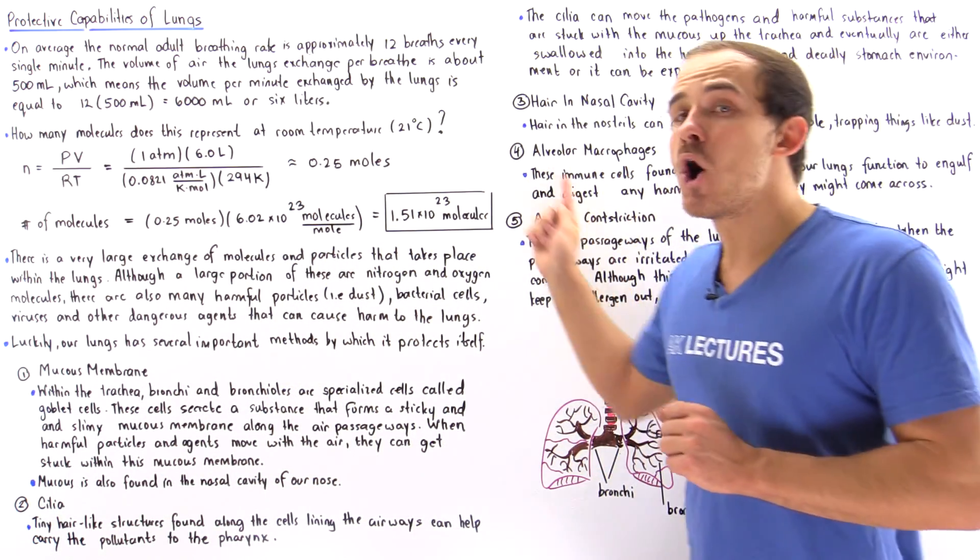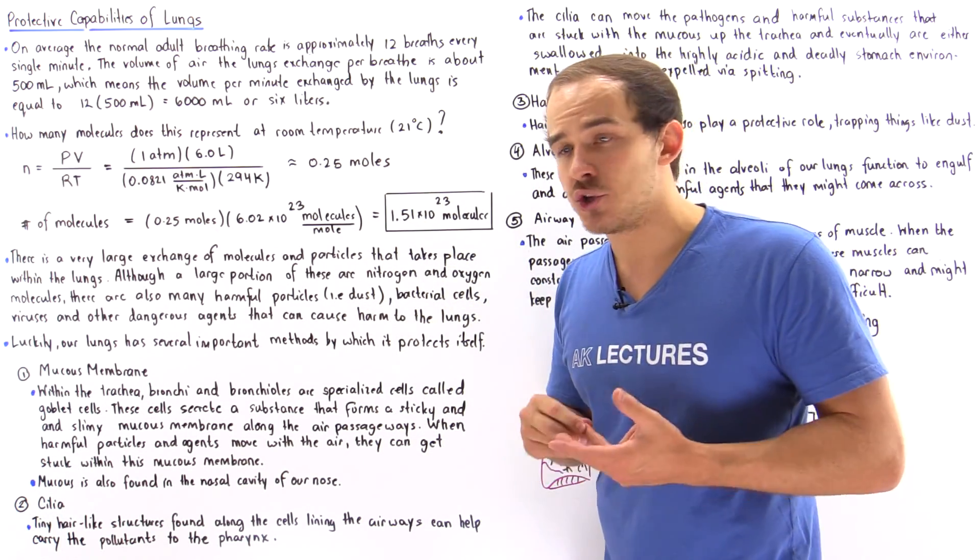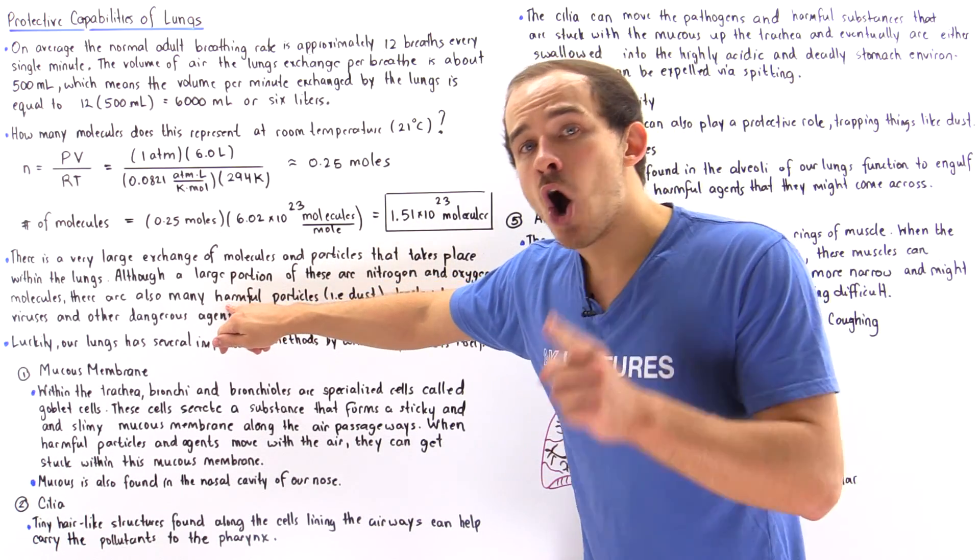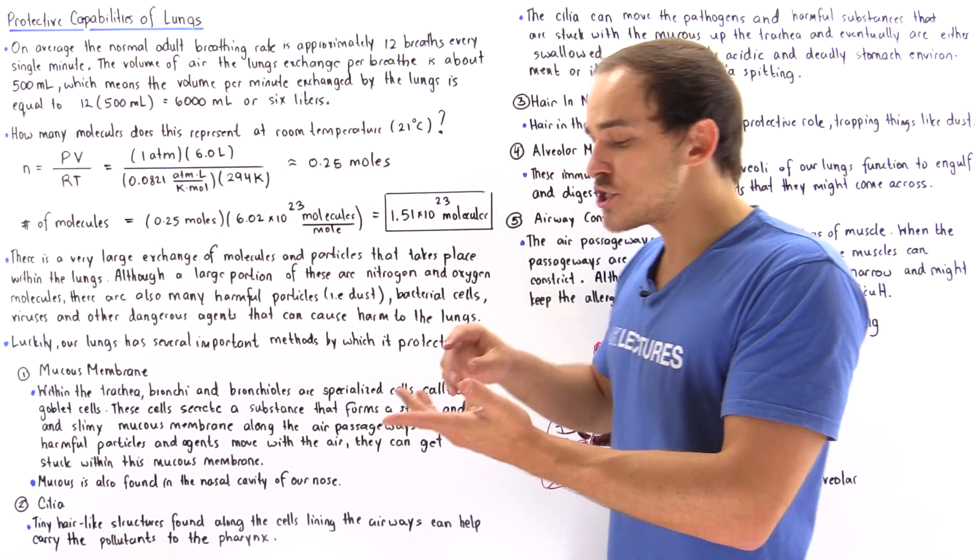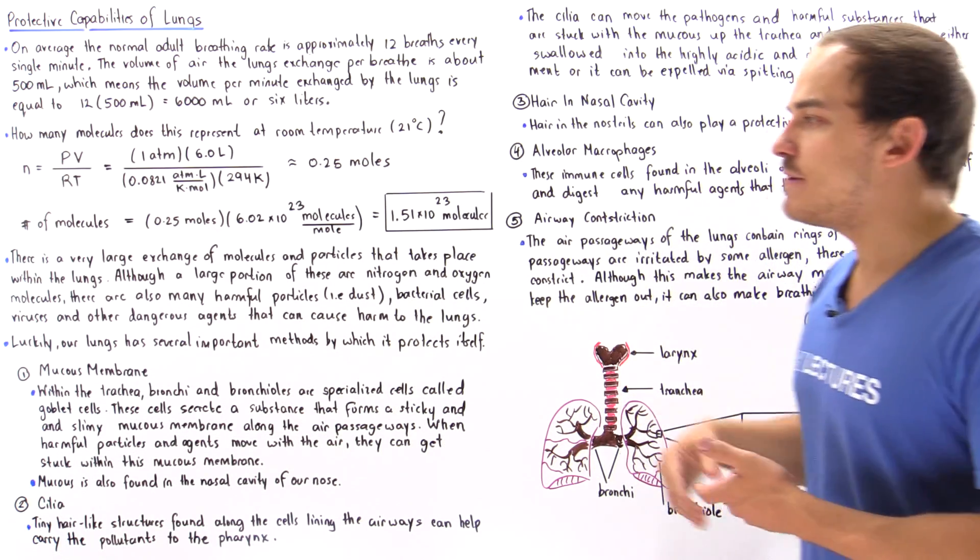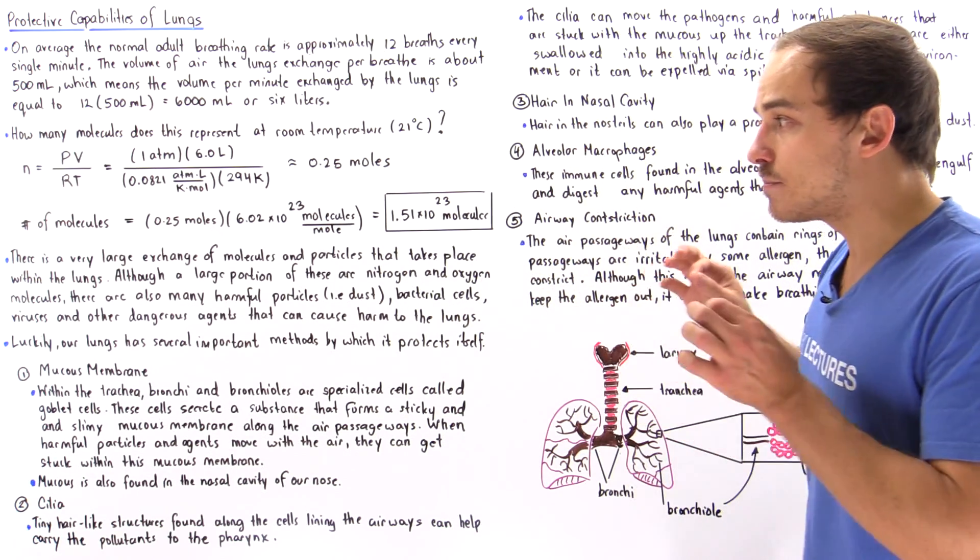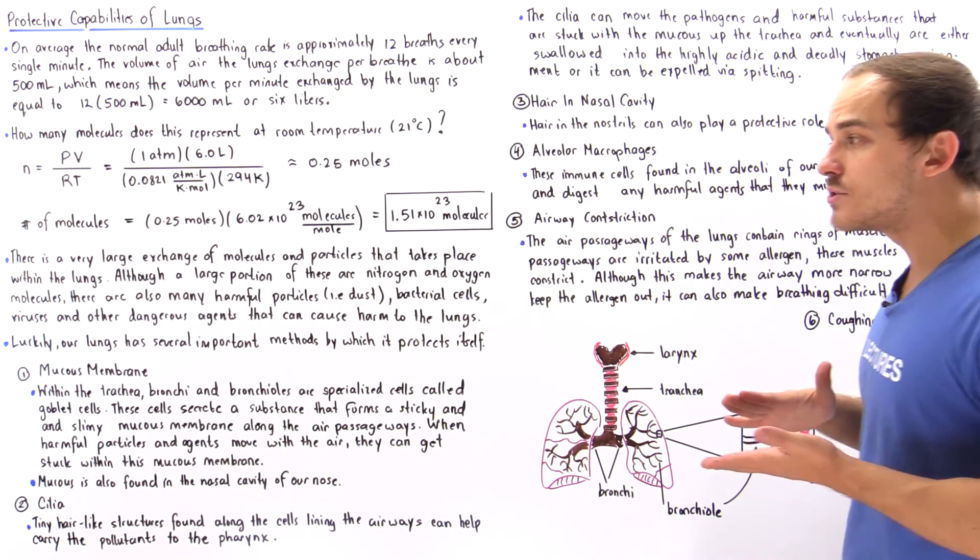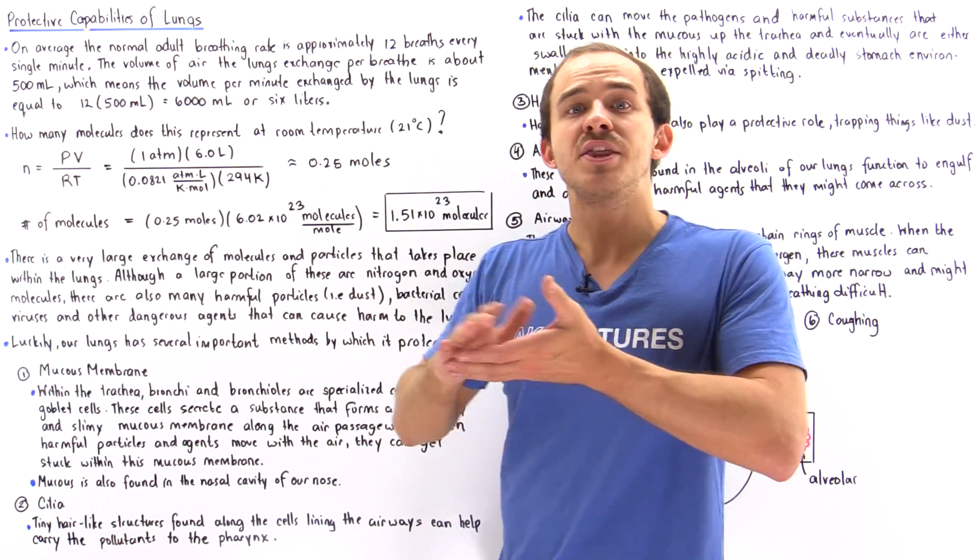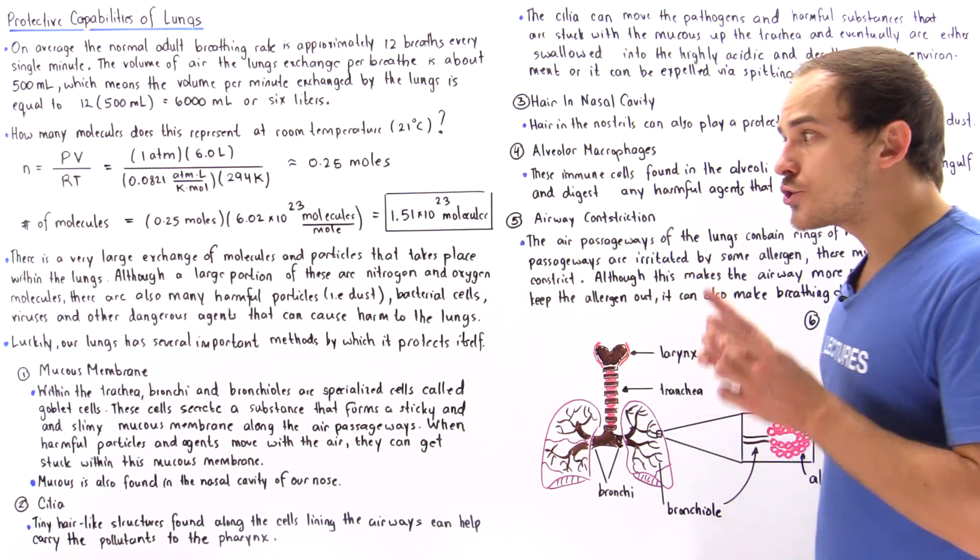Although most of these molecules are oxygen and nitrogen molecules, a good portion of these are actually harmful particles such as pollutants, contaminants, allergens—they can also be viruses and bacterial cells. This can cause a problem because our lungs create a barrier, a boundary between the outside and the internal environment.